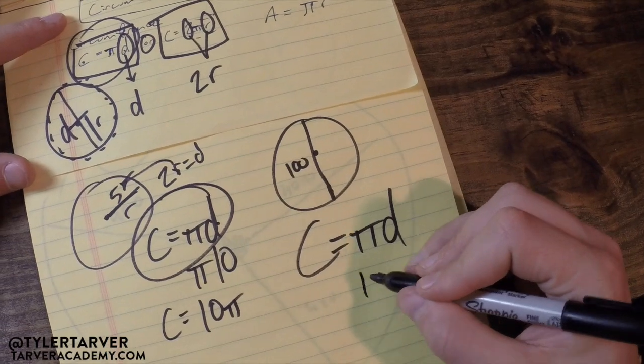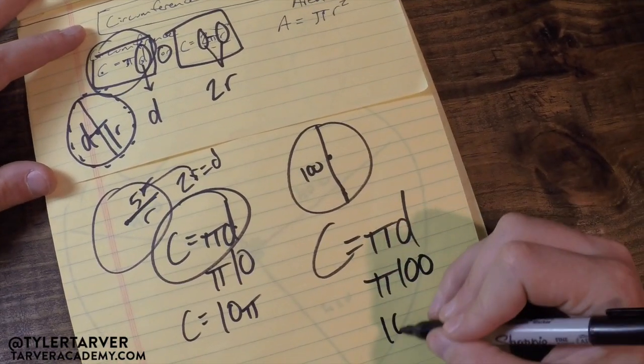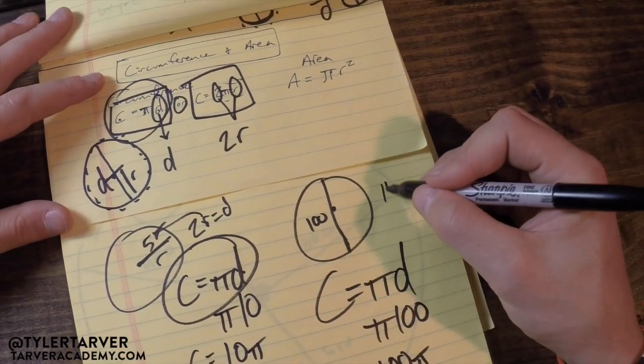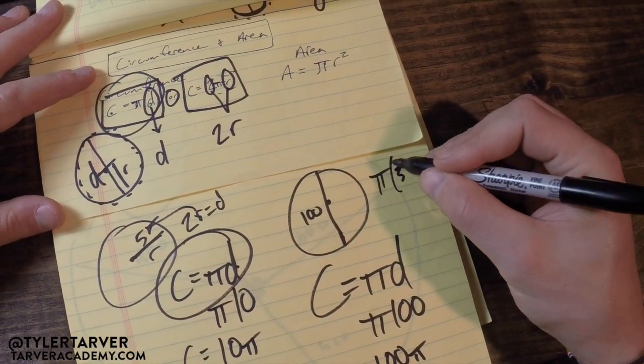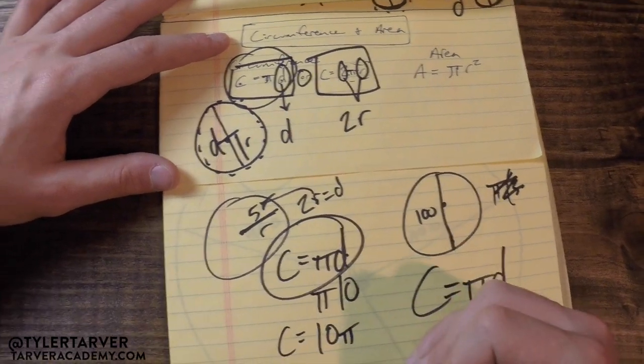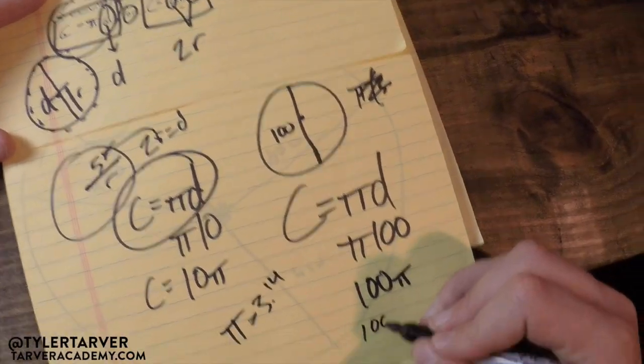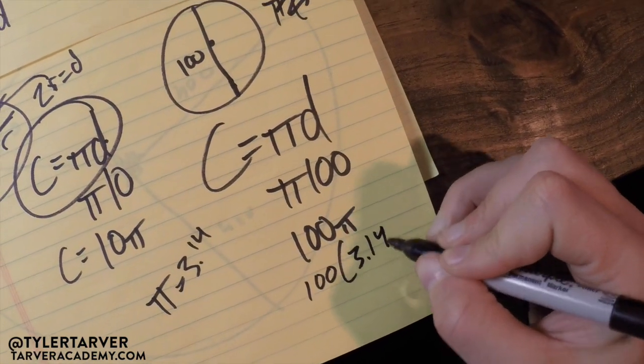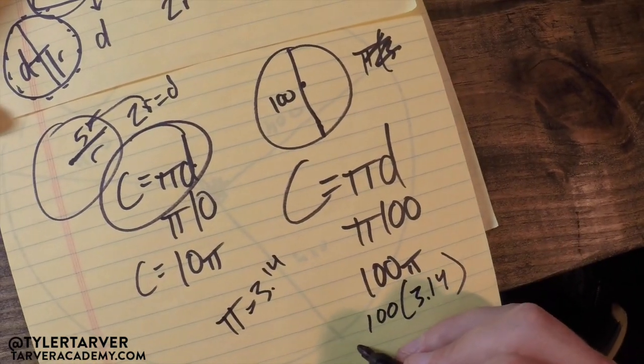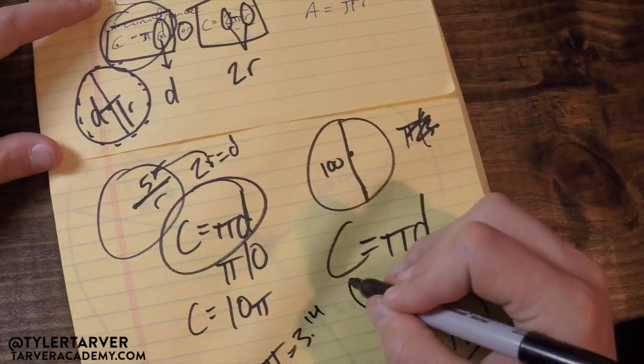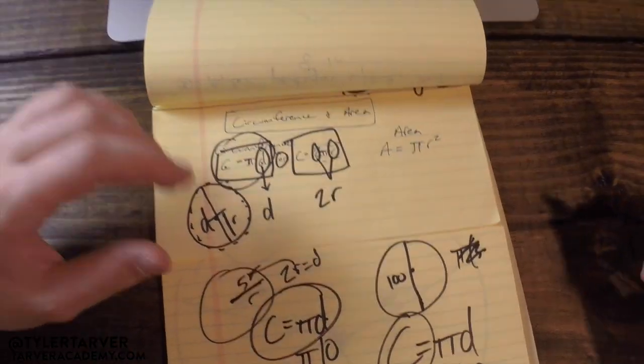And then we would just do pi times a hundred and you're done. Write it a hundred pi. Now sometimes they'll want you to work it out. Usually they'll say use pi equals three point one four, and you just multiply a hundred times three point one four, which would be 314. You're done, that's the circumference. You just learned it.